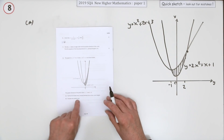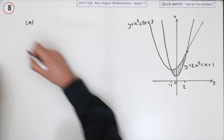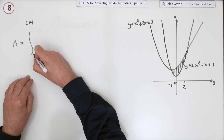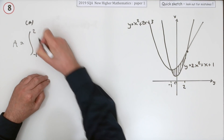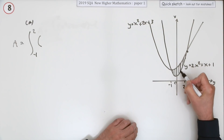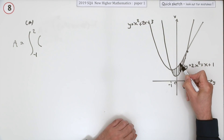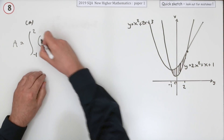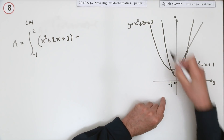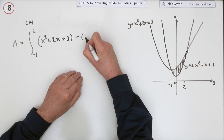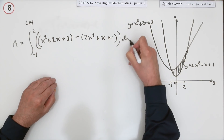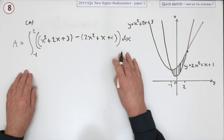In part b we just continue the flow and calculate the shaded area. The area is given by the integral starting at negative one and finishing at two. Be careful — upper take away lower. You want the heights of these little bars; the top y-coordinate is given by x squared plus 2x plus 3, subtract the lower y-coordinate given by 2x squared plus x plus 1, all times dx.